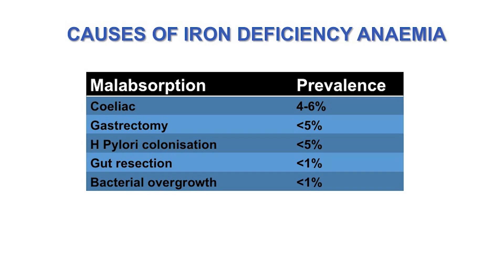The most common cause of iron deficiency anemia is blood loss from the GI tract, but there are other important causes. Dietary deficiency alone is a very uncommon cause — it takes at least eight years of a poor diet to develop iron deficiency anemia. Malabsorption is another cause; the most common contributors are celiac disease, inflammatory bowel disease, previous gastrectomy, and Helicobacter pylori infection. Rarer causes include gut resection, bacterial overgrowth, and infections such as schistosomiasis or hookworm.